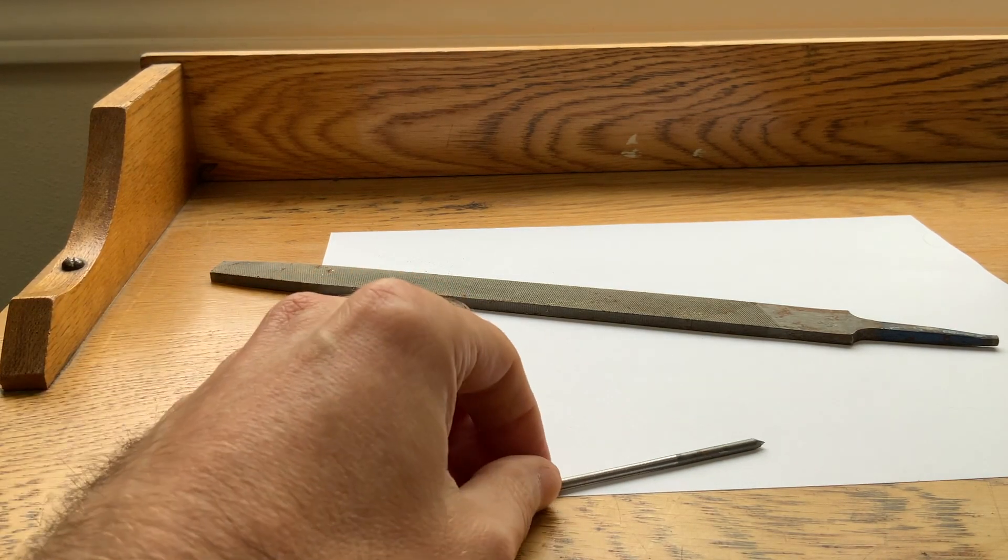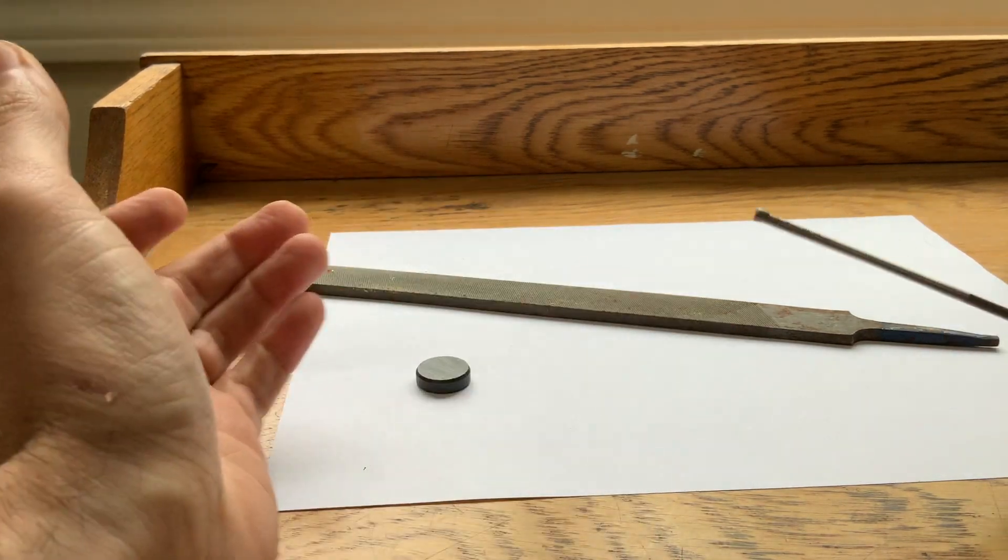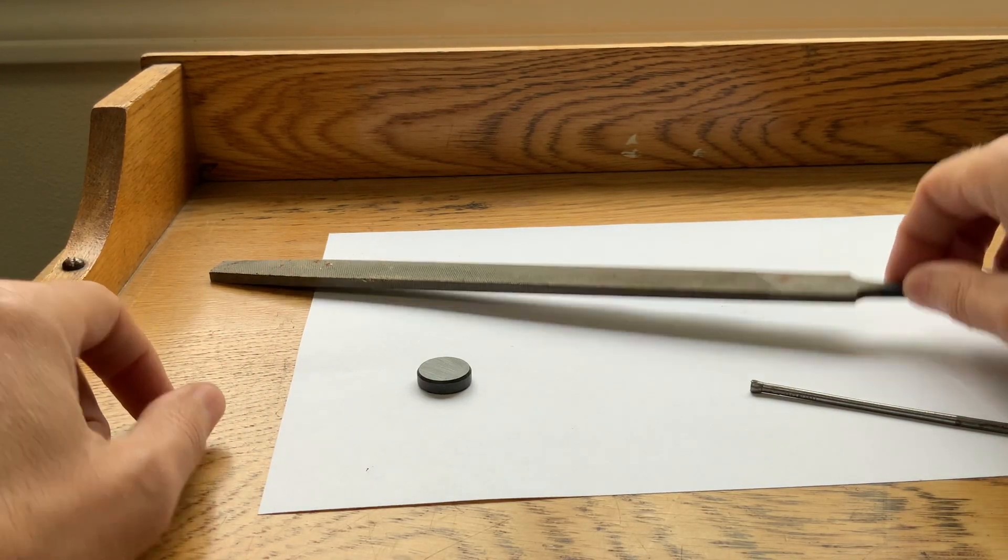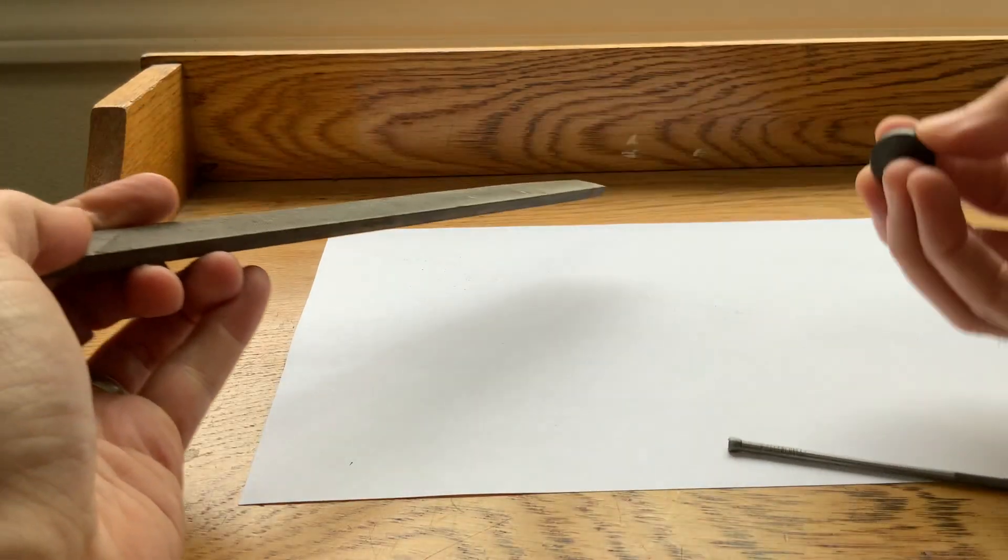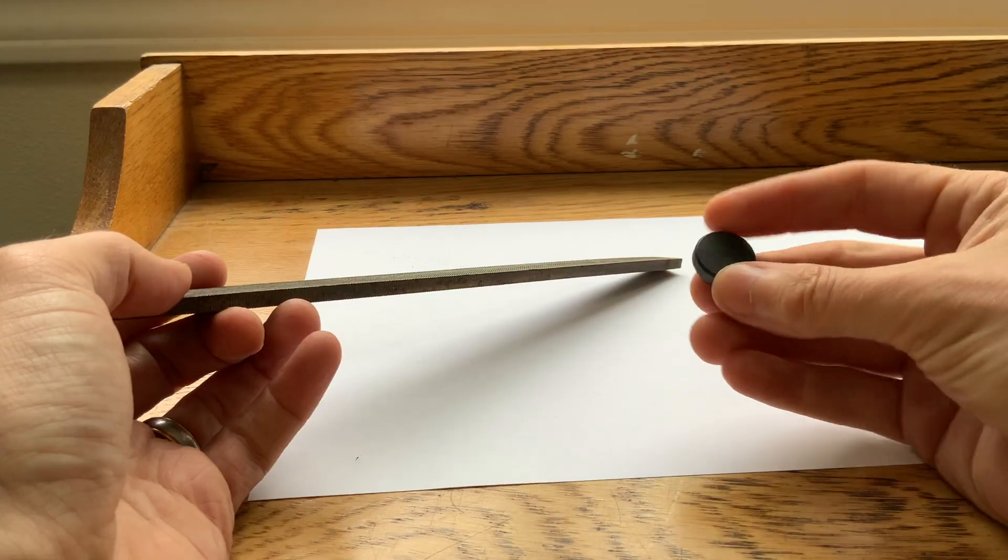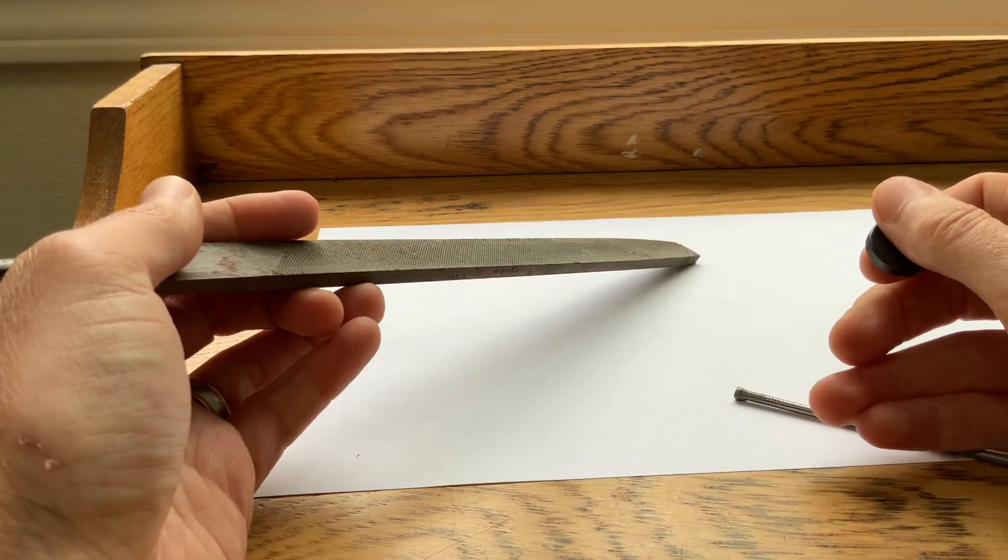So I want to do some experiments with iron filings and I need some. Here's a quick way that I came up with to make some. You could take a permanent magnet and run it through some dirt. It turns out there's enough iron oxide particles in the dirt that oftentimes you can find it.